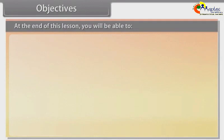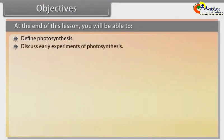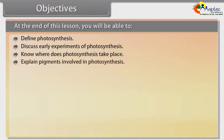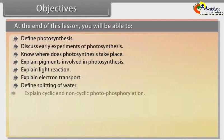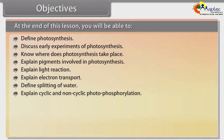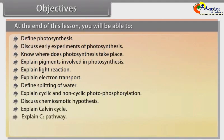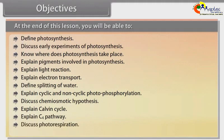Objectives: At the end of this lesson, you will be able to define photosynthesis, discuss early experiments, know where photosynthesis takes place, explain pigments involved, explain light reaction, electron transport, splitting of water, cyclic and non-cyclic photophosphorylation, chemiosmotic hypothesis, Calvin cycle, C4 pathway, photorespiration, and factors affecting photosynthesis.